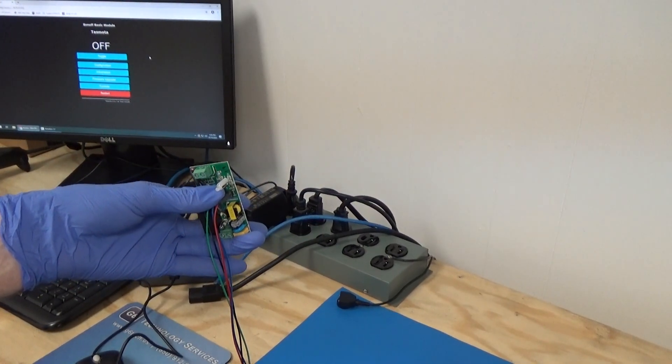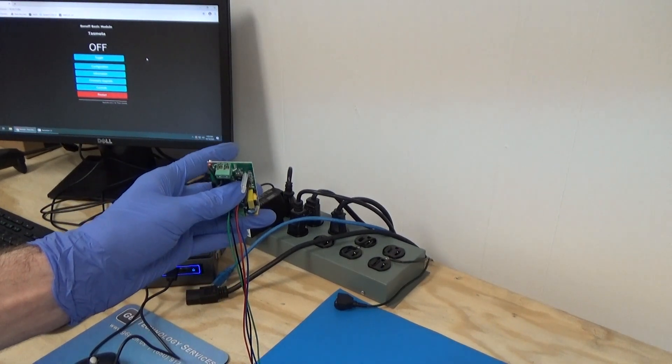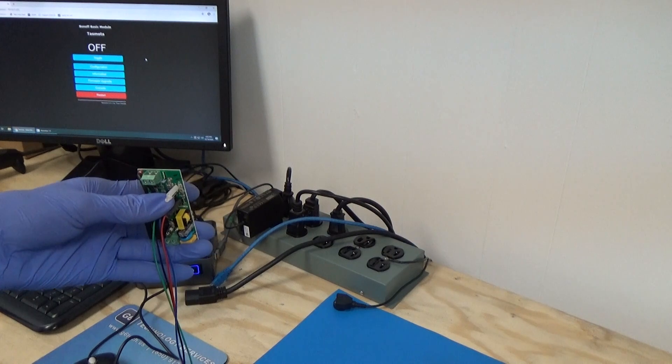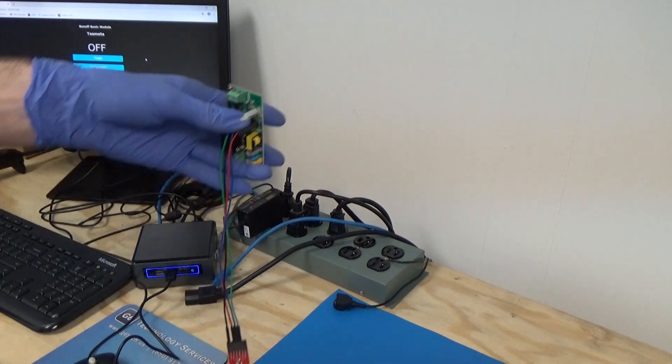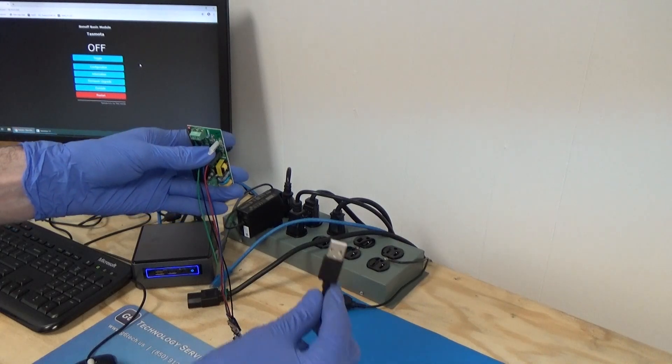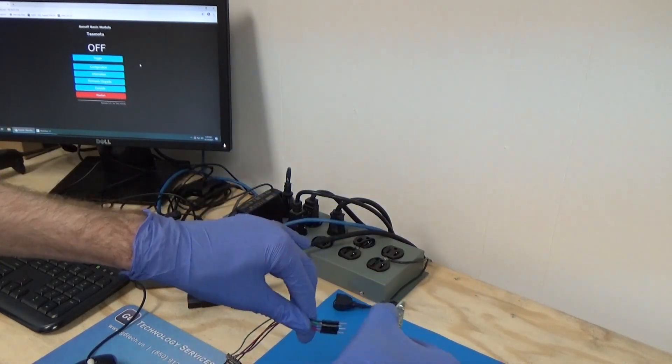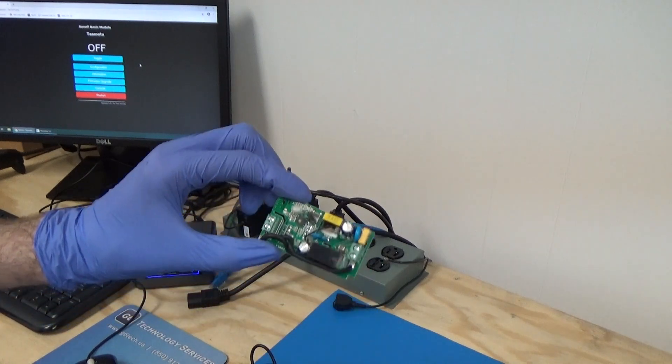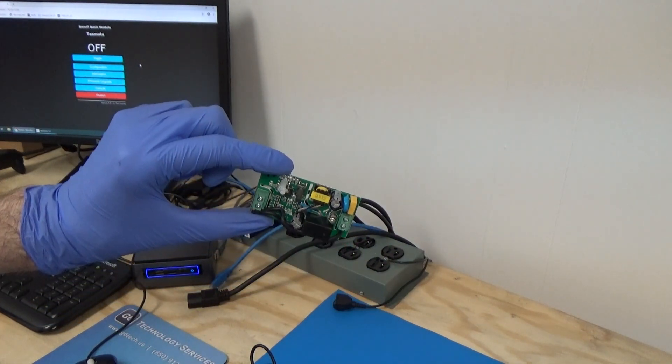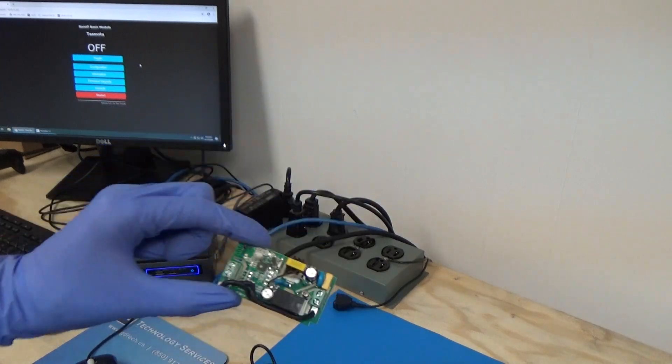So everything is flashed and working. We're still holding on to our jumpers. So what we're going to do now is just unplug the serial to USB adapter from the computer. And now we can let go of our jumpers and just pull those right out. And now we have our board ready to go. So we'll go ahead and put it back in the case and we'll test it out with it not being connected to the computer.